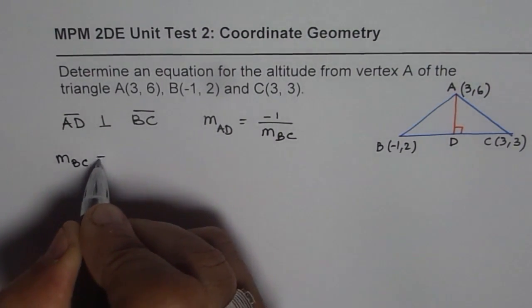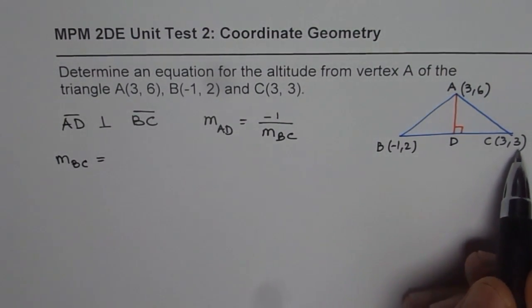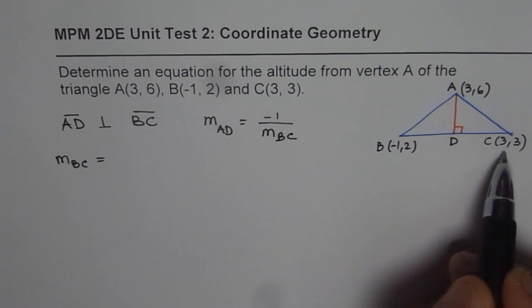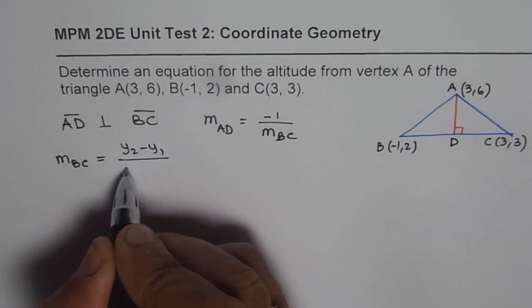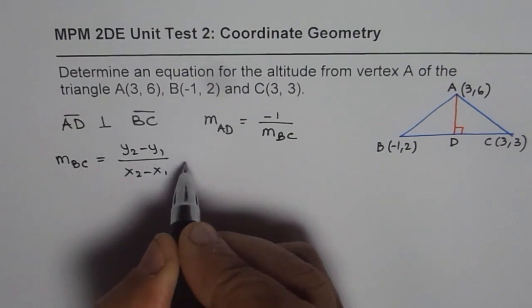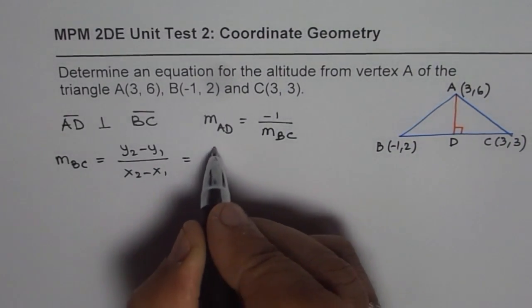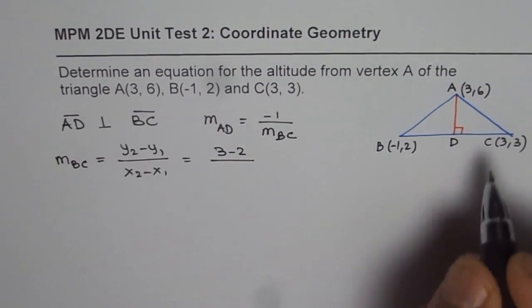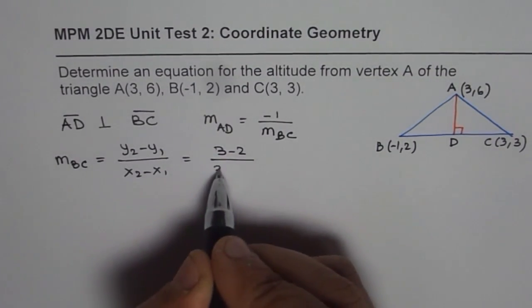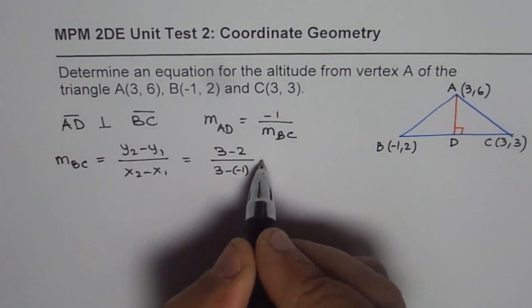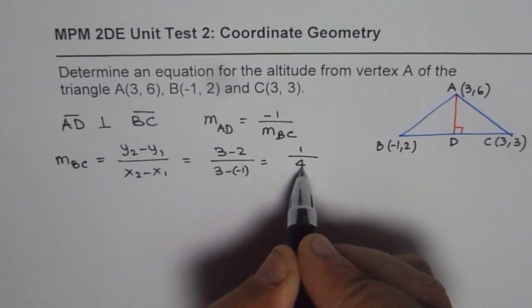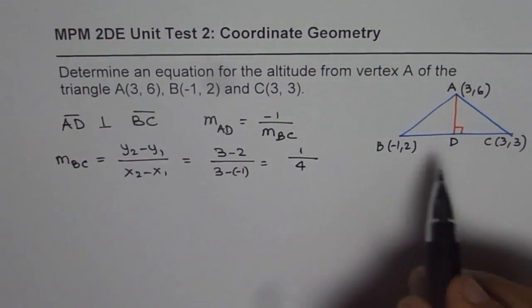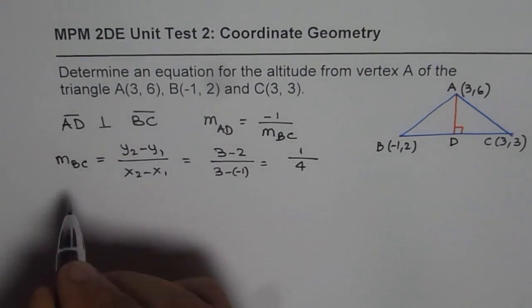segment BC, which in this case will be y2 minus y1 divided by x2 minus x1. That's the formula. Now here, 3 minus 2 divided by 3 minus (-1). So 3 minus (-1) is 4, and 3 minus 2 is 1. So that is 1/4. That is the slope of BC.